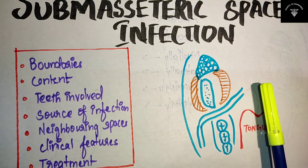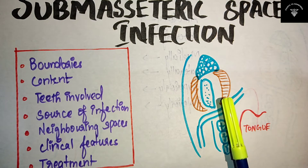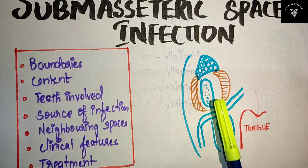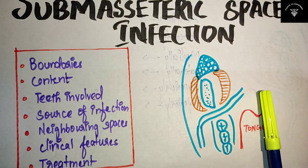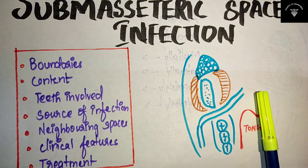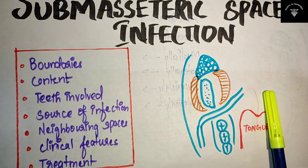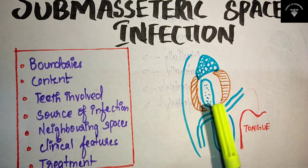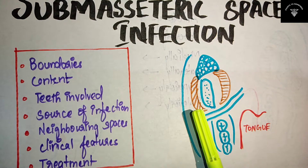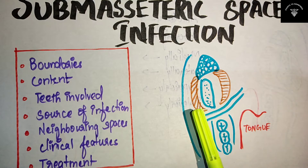Submasseteric space is one of the masticatory spaces. There are five masticatory spaces, which we have already discussed in the previous video. Check out my previous video for details. Now let's move on to the topic.